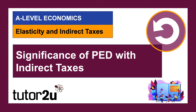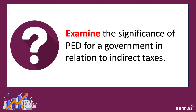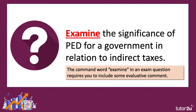One of the most important applications of price elasticity of demand is the impact of an indirect tax as a form of government intervention and the significance of the coefficient of price elasticity. Let's spend a few minutes thinking about that with some chains of reasoning and some analysis diagrams. The question is: examine the significance of PED for a government in relation to indirect taxes. The word 'examine' is a command word and you do need to include some evaluative comment — it's not the same as 'explain' or 'analyse'; examine requires some evaluation.